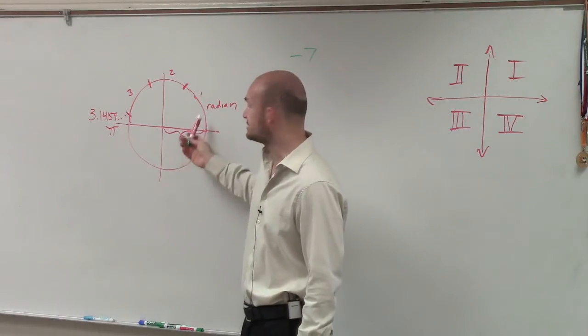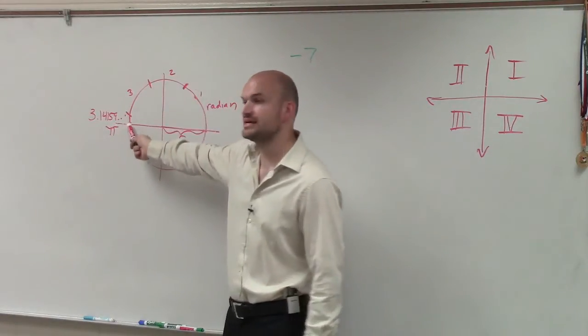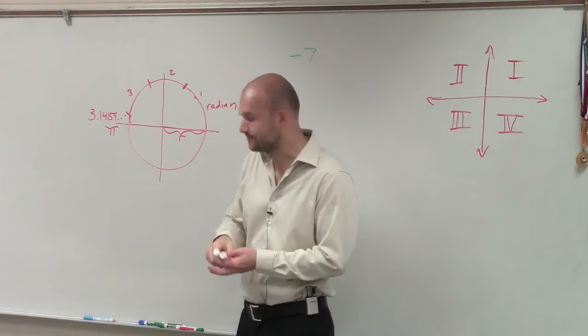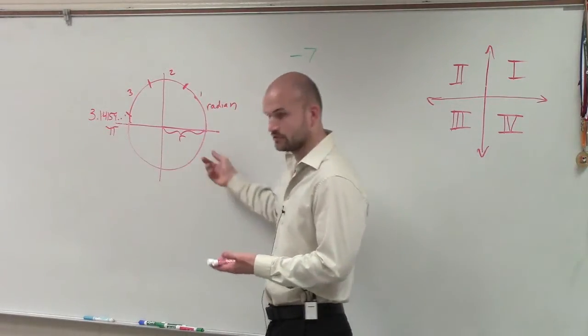When looking at a radian, remember, you take the radius and you wrap it around. And we notice that halfway around a circle is going to be pi, and then all the way around the circle would be 2 pi.